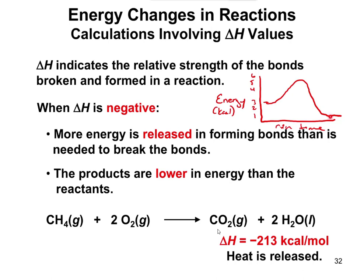We would say the products are lower in energy because they're lower on this graph than the reactants. If we measure delta H — remember that delta anything is final minus initial — the final is 1 kilocalorie and the initial is 3 kilocalories. 1 minus 3 is negative 2 kilocalories, so delta H would be negative.